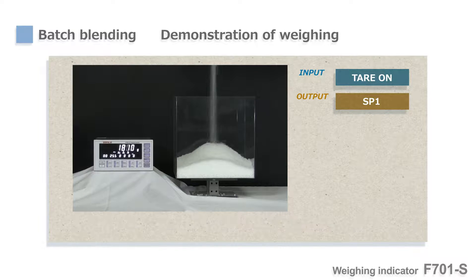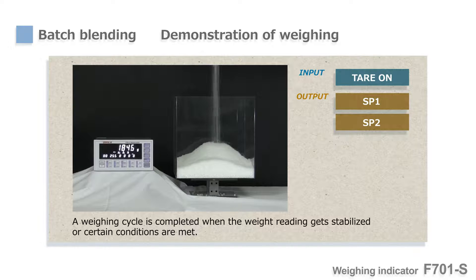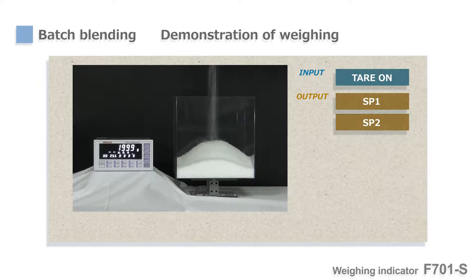Yet, as the weight level reaches the targets, F701S sends SP1 and SP2 signals to control the gate and reduce the dosing amount gradually. Then, right before the weight reaches SP3, the gate is closed completely.